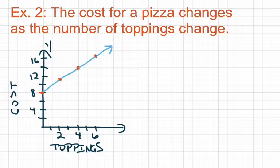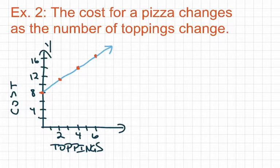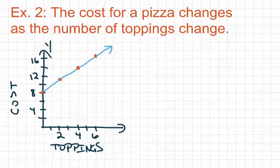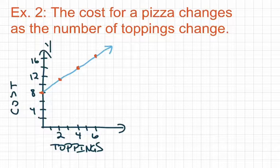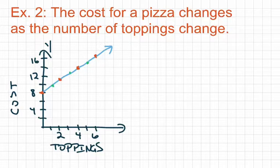For the second example, we have a graph showing how the cost of pizza changes as the number of toppings changes. A pizza with 0 toppings costs $8, and a pizza with 4 toppings costs $14. In this graph, we don't have ordered pairs for 1, 3, or 5 toppings, but we should still be able to estimate the cost based on those topping values. Those points would fall on the graph, and we know it's still going to be linear because the points fall on a straight line.